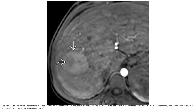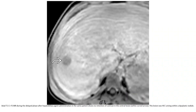On T1C+ hepatobiliary agent image during the hepatobiliary phase in an adolescent with alpha-1 antitrypsin deficiency, a slightly hyperintense lesion in the right lobe of the liver is seen. The mass has a small hypointense area. During the late hepatobiliary phase, no retention is seen in the central region. This lesion was confirmed as HCC arising within a dysplastic nodule.